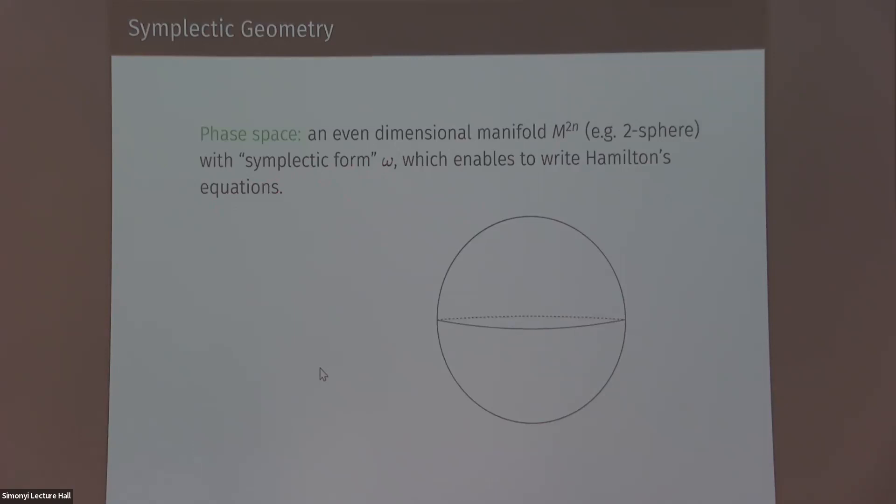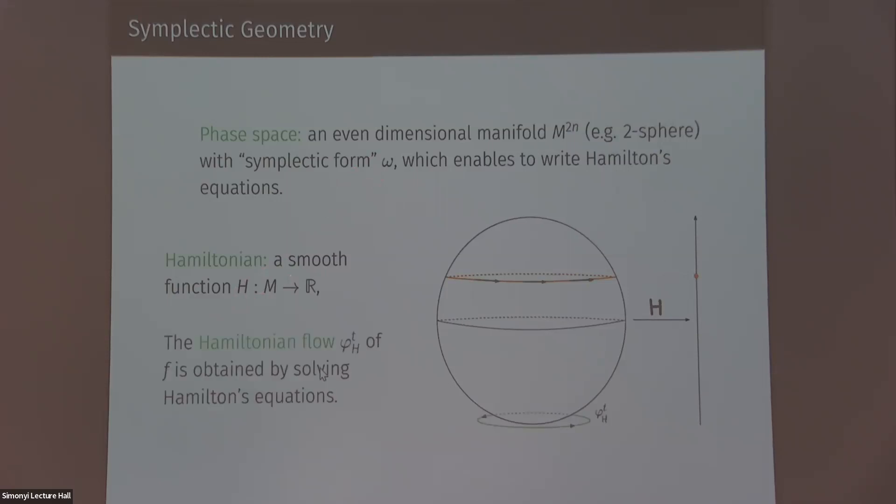But now we can play the same game. So we would have a function from M to R. Using this function and omega, we can write ODEs. Their solution is a Hamiltonian flow. So in this example, H is the height function on the sphere. And the flow it generates is just a rotation around the Z axis.